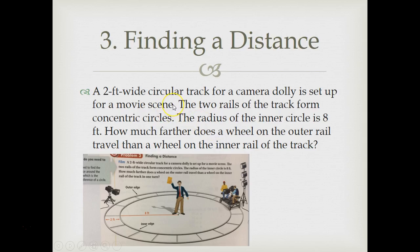A 2-foot-wide circular track for a camera dolly is set up for a movie scene. The two rails of the track form concentric circles. Concentric just means one circle within another. The radius of the inner circle is 8 feet. How much farther does a wheel on the outer track travel than a wheel on the inner rail? So the inside circle is smaller than the outside circle, so the wheel is going to not travel as far as the wheels on the outside part.